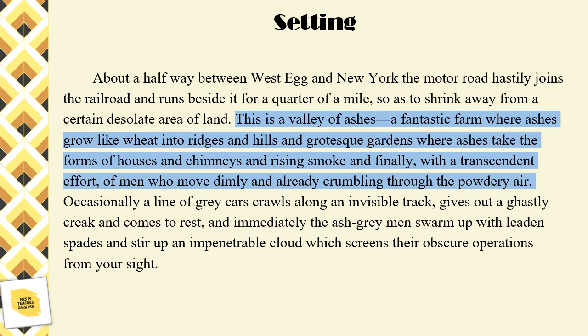This is a valley of ashes, a fantastic farm where ashes grow like wheat into ridges and hills and grotesque gardens, where ashes take the forms of houses and chimneys and rising smoke, and finally with the transcendent effort of men who move dimly and already crumbling through the powdery air. How would you compare the description of this area to the descriptions of Tom and Daisy's house?